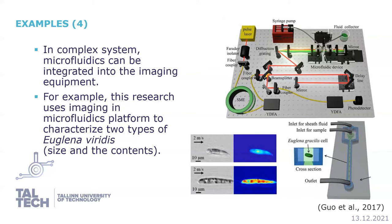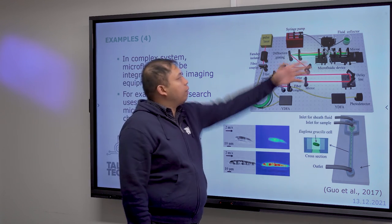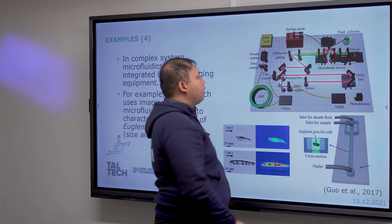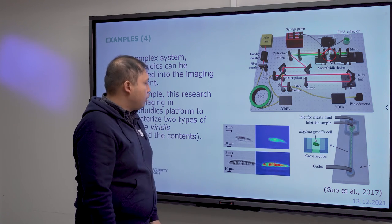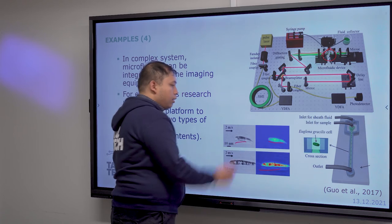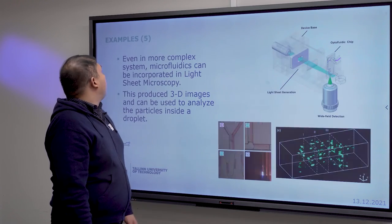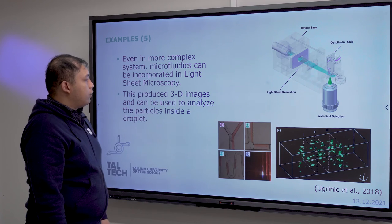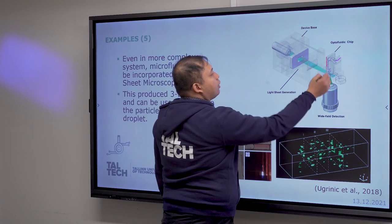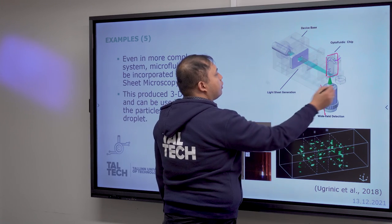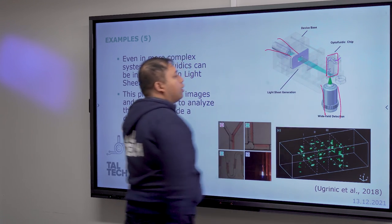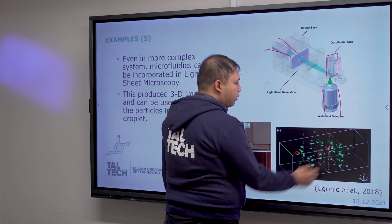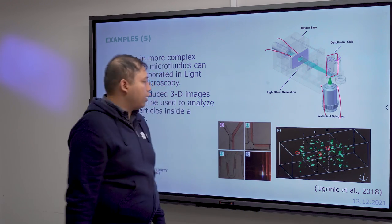In a more complex system, the microfluidic device is combined with additional sensors that help distinguish between two types of species — Euglena gracilis. Finally, the microfluidic system can also be embedded with a light sheet microscope. The chip includes a white-field detection component and a light sheet generator that helps you image 3D objects so you can analyze what is happening in your system.